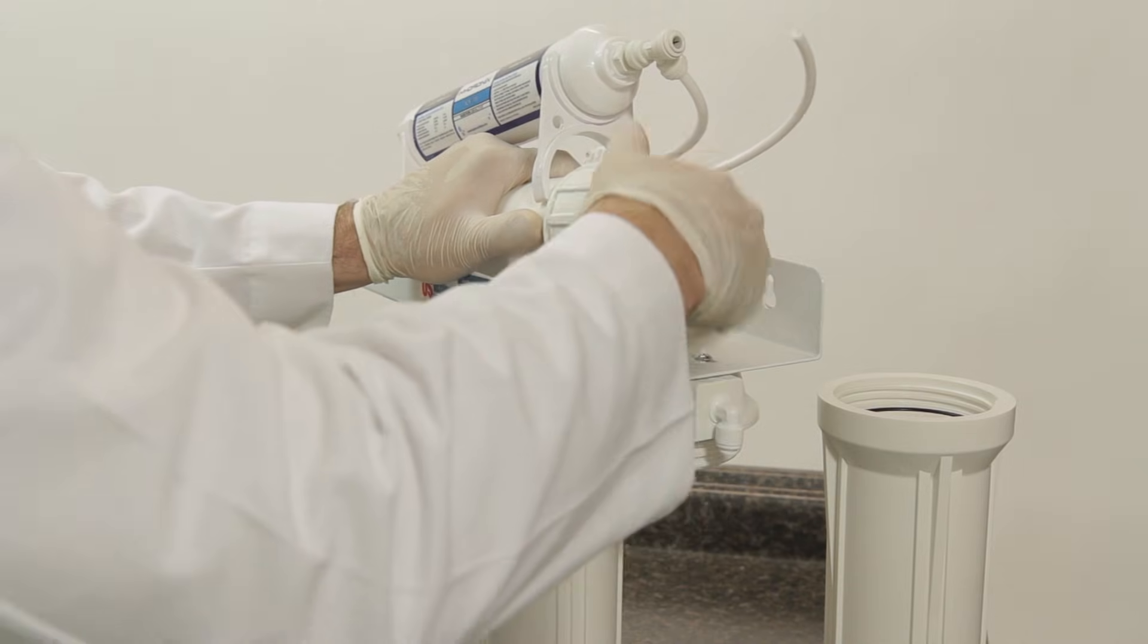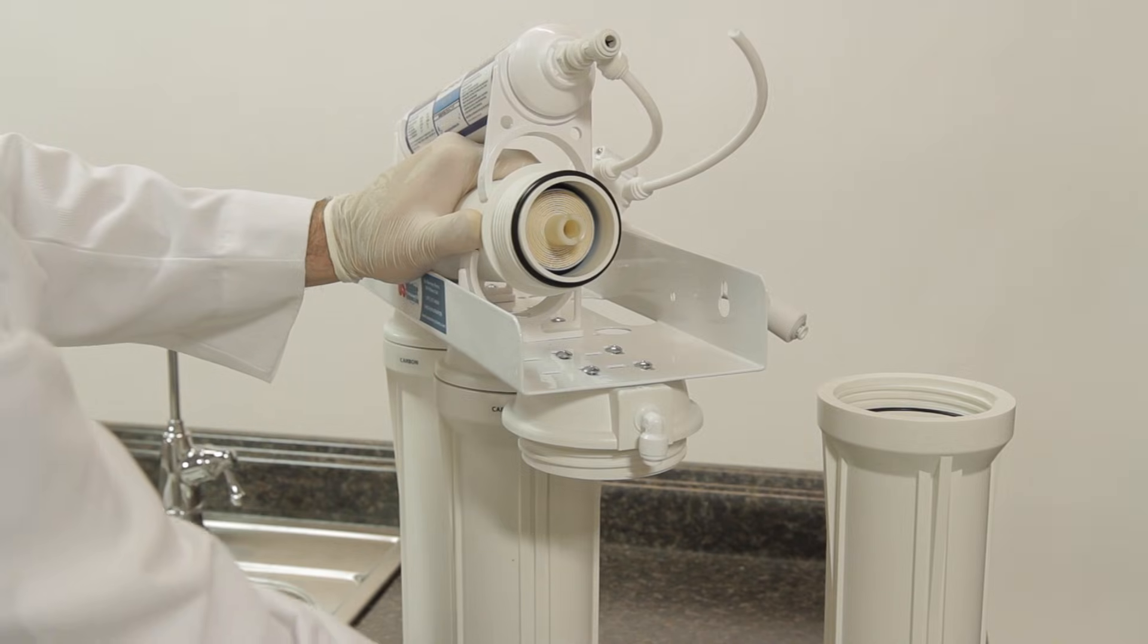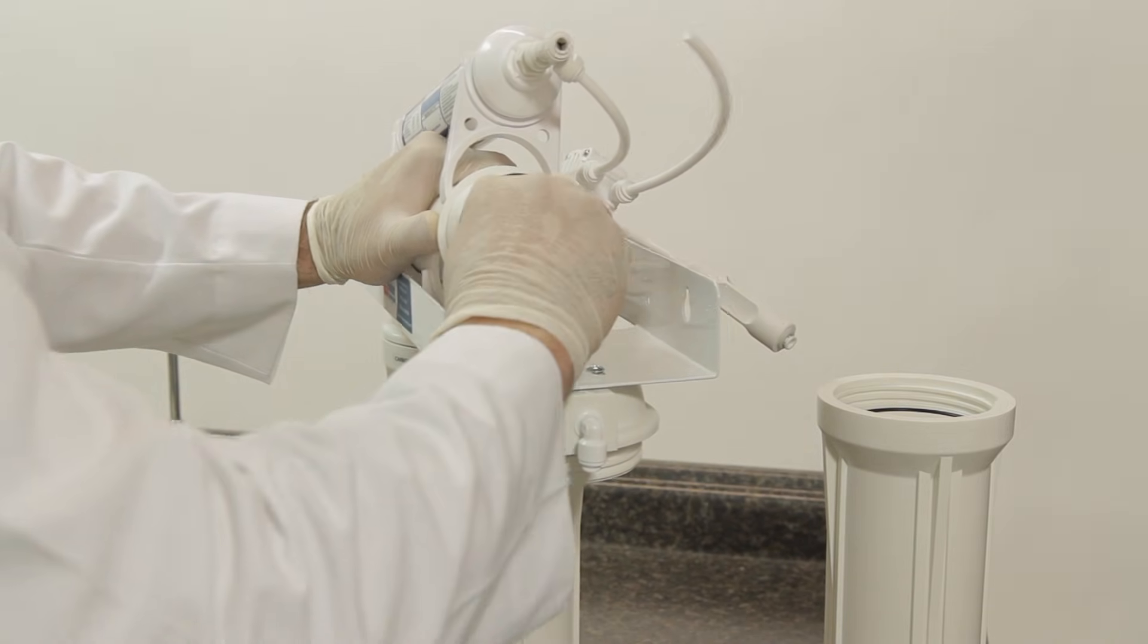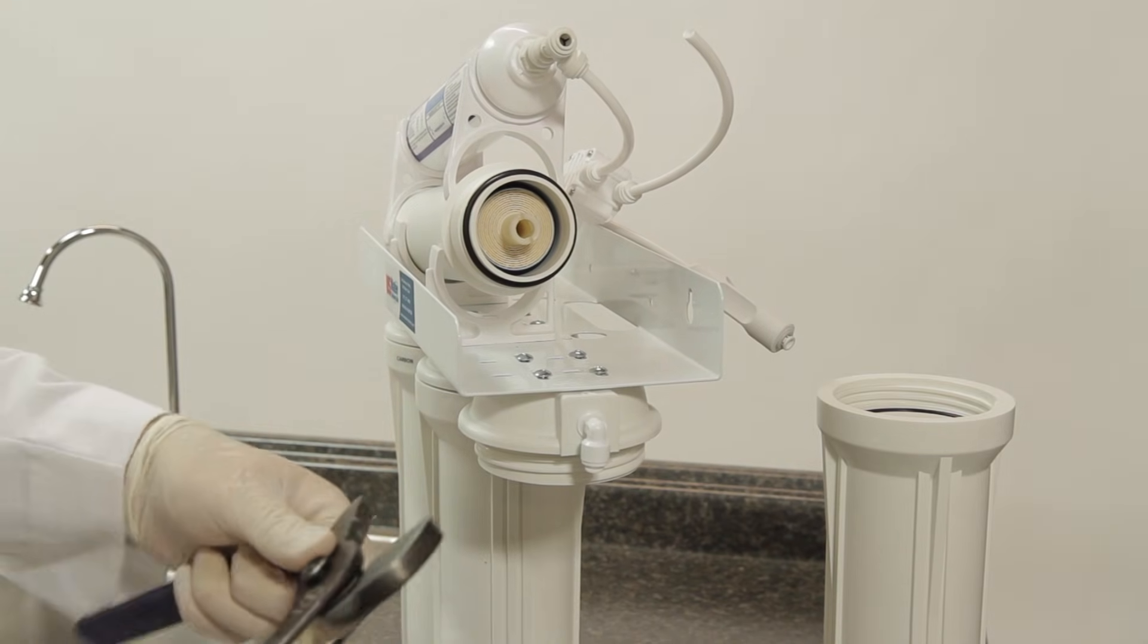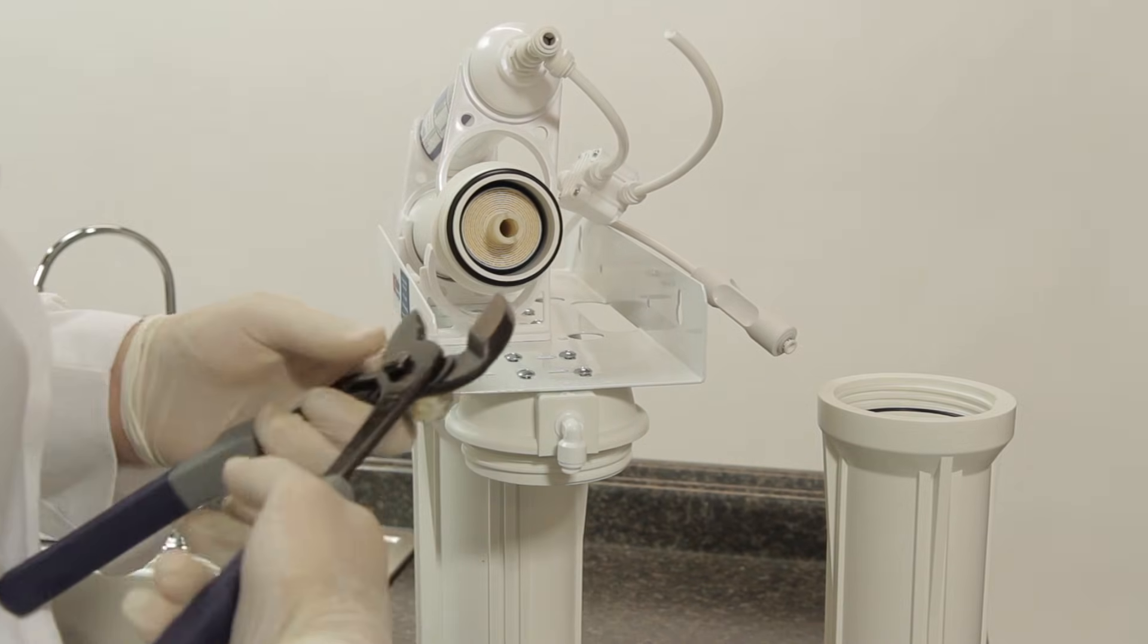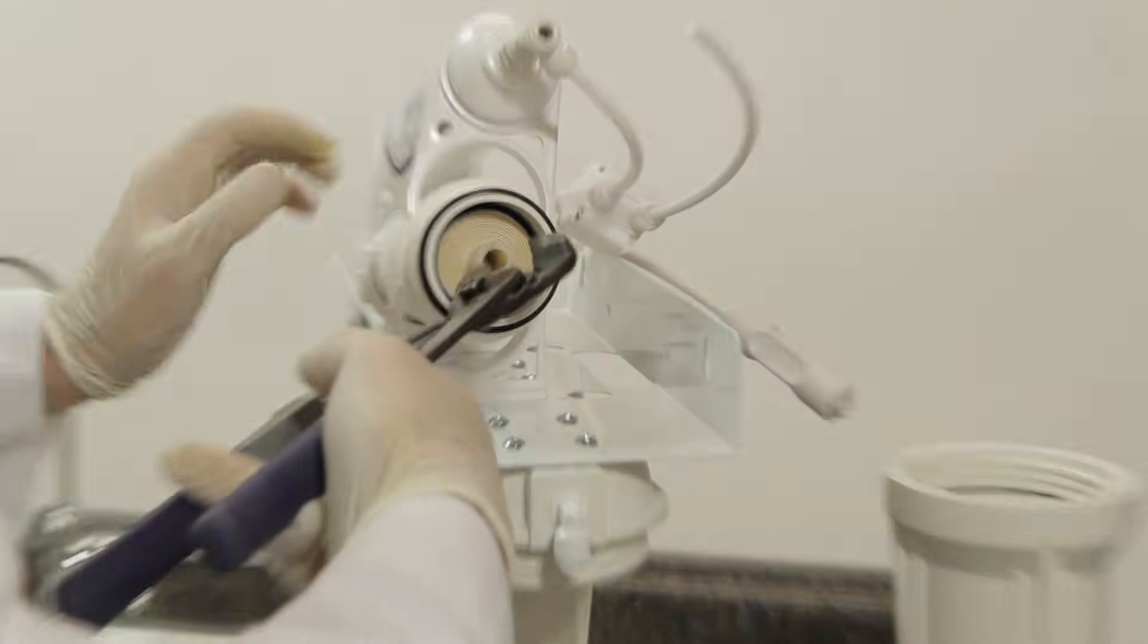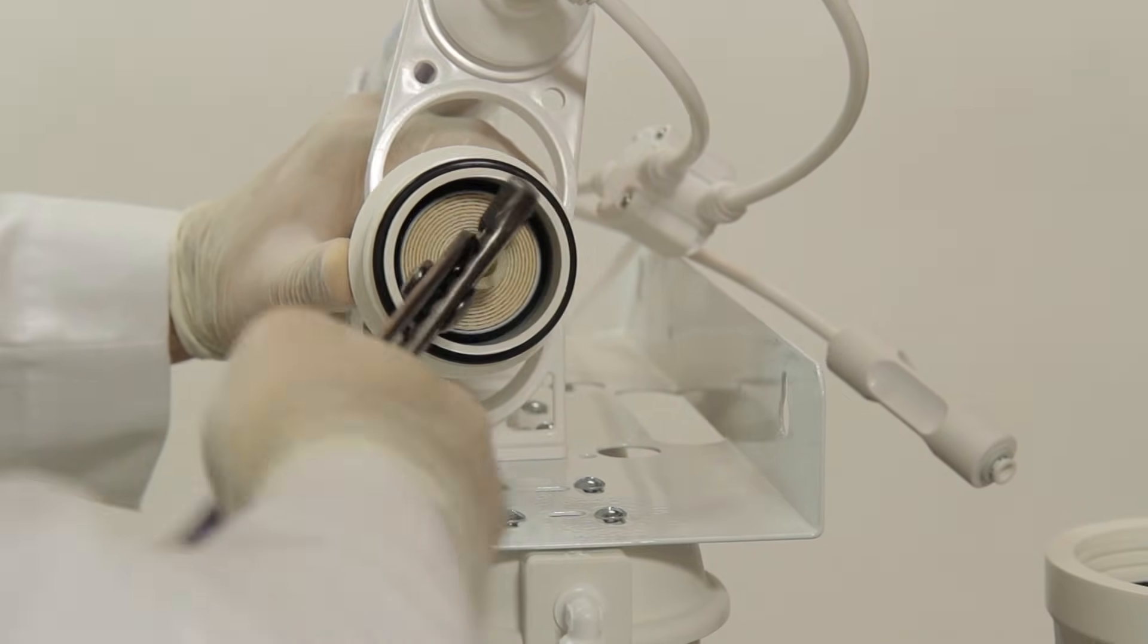Once you unscrew this, the membrane will be inside and it will be sealed in there very snug. Pulling with your fingers probably won't work. You'll want to use channel locks or pliers. When you're pulling on this, just be very gentle on the plastic here. Kind of twist.